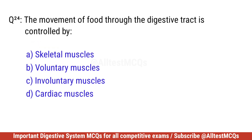Question twenty-four. The movement of food through the digestive tract is controlled by? Correct option is C. Involuntary muscles.